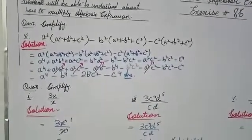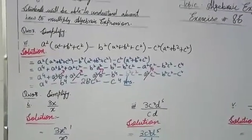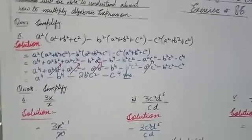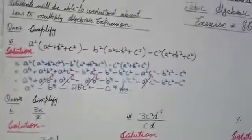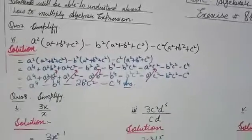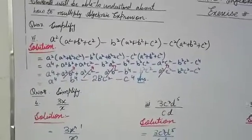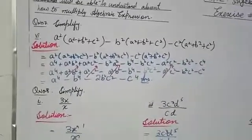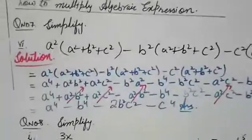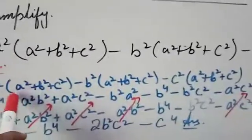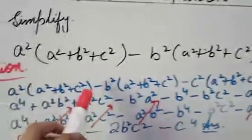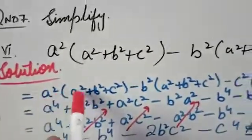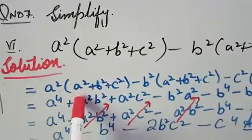You have three terms, and each term has one variable being multiplied with it — which is a², b², and c² one by one. Multiply a² with the first term: a² multiplied by (a² + b² + c²). Multiply a² with the entire term.